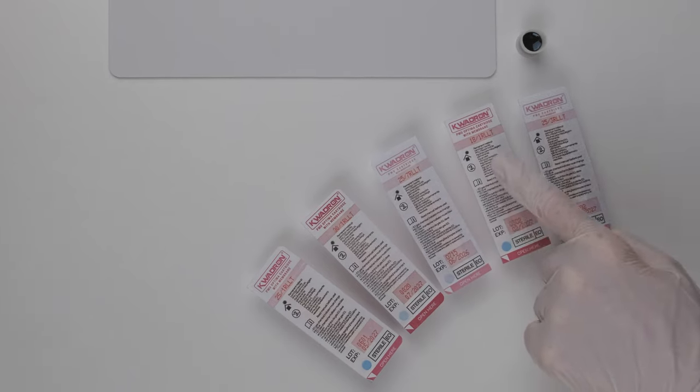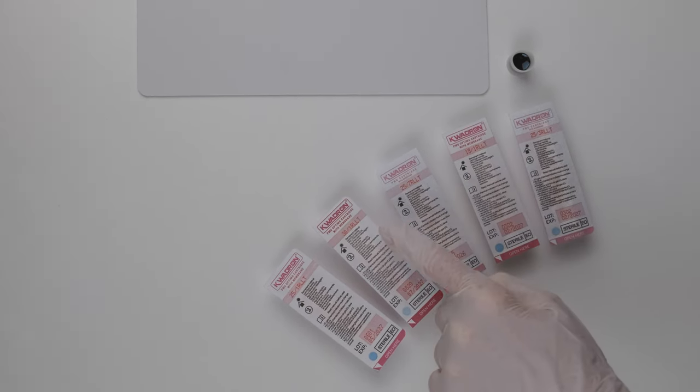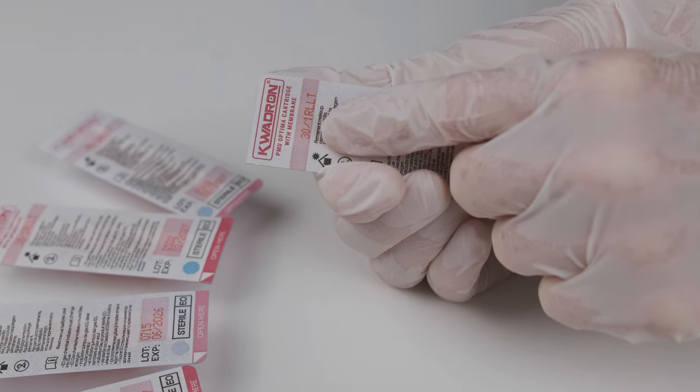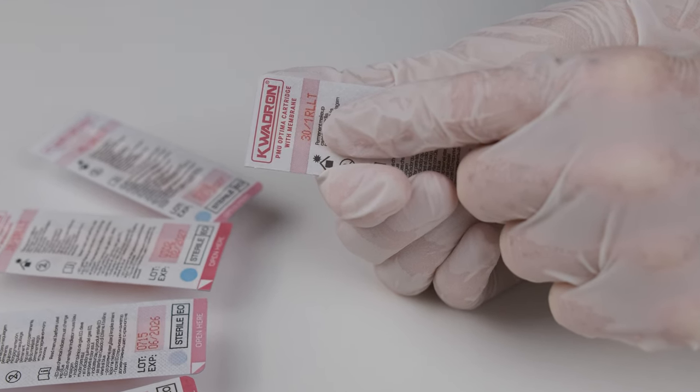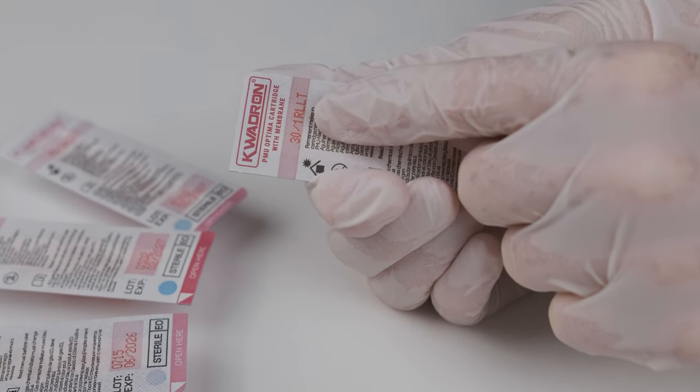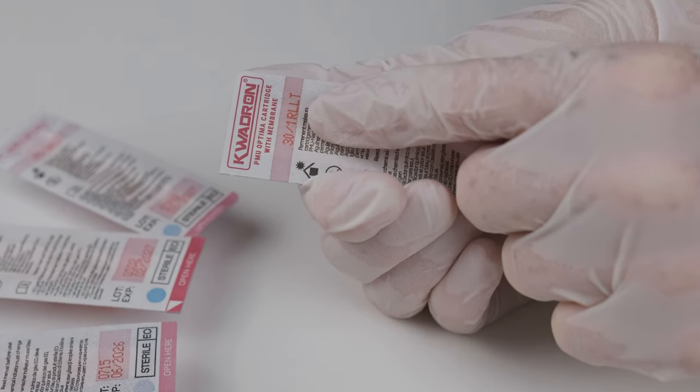Now I would like to teach you how you can read what's written on the cartridge. 30 or 0.30 means how thick is the needle. It's almost always in millimeters. Then there is one needle, so it means there is only one needle in a cartridge.